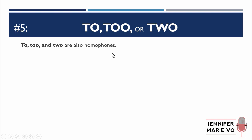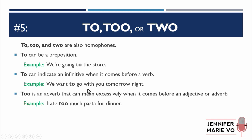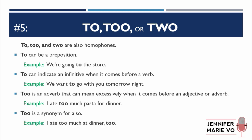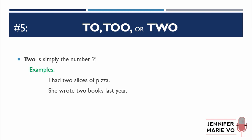Another very common mistake is to, too, or two. "To" can be a preposition — "we're going to the store" — or it can indicate an infinitive when it comes before a verb: "we want to go with you tomorrow night." "Too" (T-O-O) is an adverb that can mean excessively before an adjective or adverb: "I ate too much pasta for dinner" — meaning more than I should have. "Too" is also a synonym for "also": "I ate too much at dinner too" / "me too" means me also. And "two" is simply the number 2 — "I had two slices of pizza," "she wrote two books last year."